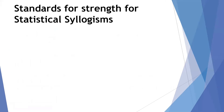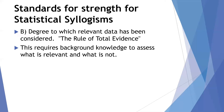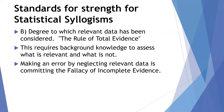The second standard of strength for a statistical syllogism is the degree to which relevant data has been considered — the rule of total evidence. This requires background knowledge to assess what's relevant. For example, related to the argument about Tuffy the cat, if it's known that Tuffy can do amazing pet tricks, then that information needs to be considered. Tuffy is likely an exception to the general rule, so it would be improper to draw the earlier conclusion. Making an error by neglecting relevant data is committing the fallacy of incomplete evidence — failing to apply the rule of total evidence.